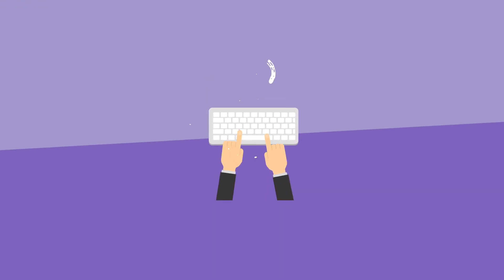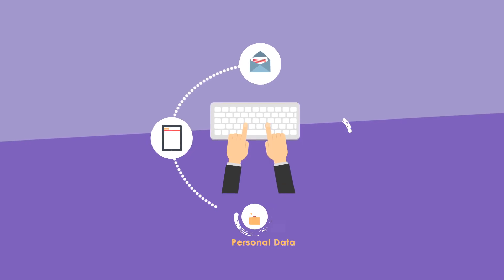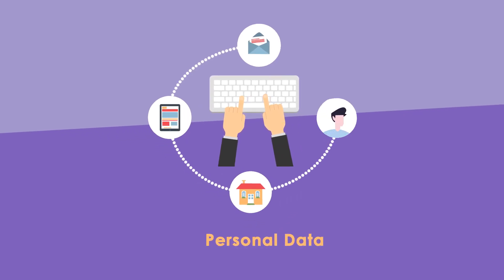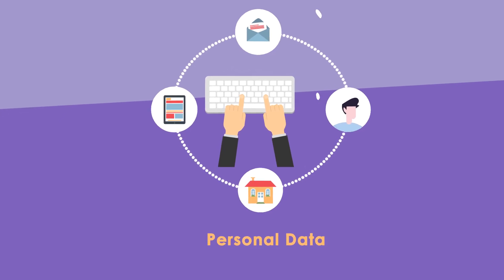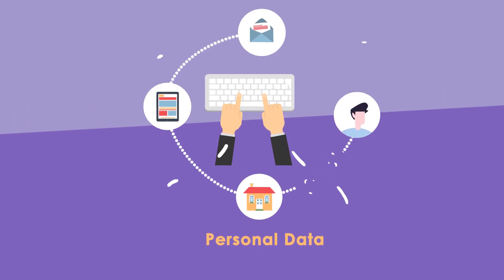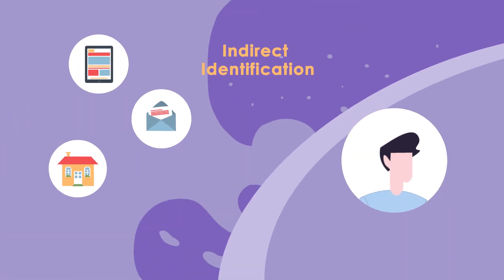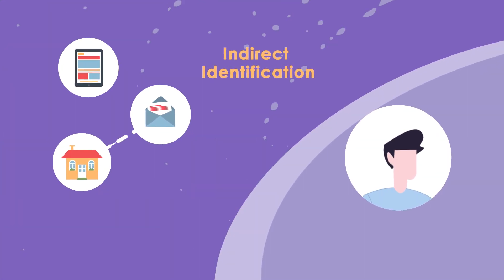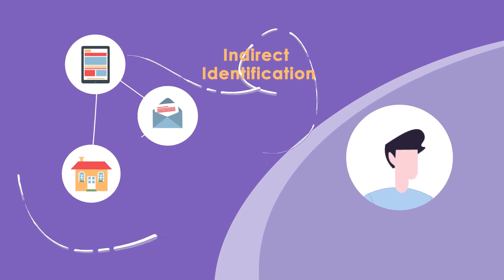Direct identification means the personal data allows you to directly identify the person it relates to, such as the phone number or home address.